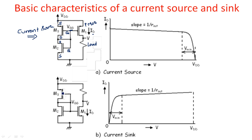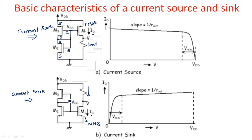Similarly, for the NMOS transistor as a current sinking circuit, the same setup is used. In place of the top transistor we have a resistor, and at the bottom we have an NMOS transistor M1, since NMOS should be connected in the pull-down position. M1 is an NMOS transistor which draws the current from the load, and ID is the current sinking current. The current flowing through the left-hand branch and the current on the right-hand side are equal — that is why they are called current mirrors.